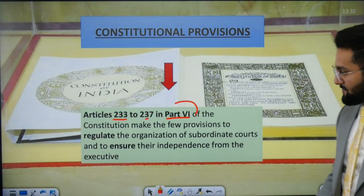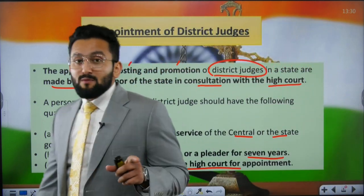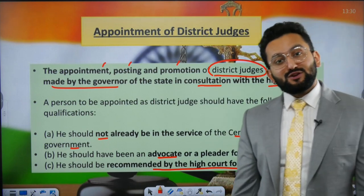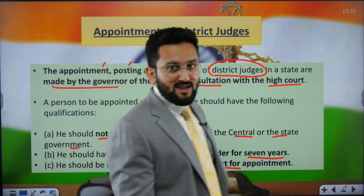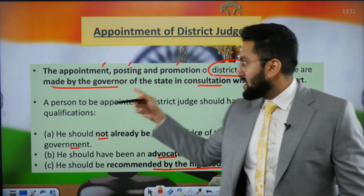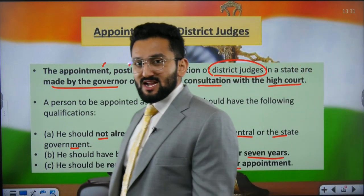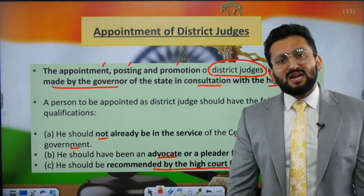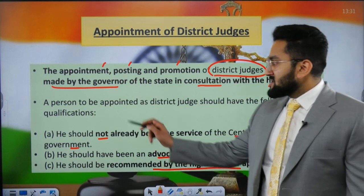Now, appointment of district judges. UPSC can play with you by saying 'appointment of judges at district level' versus 'appointment of district judge.' There's a difference, because judges at district level can include other judges as well — for example, Additional District Judge or Metropolitan Magistrate. The appointment, posting, and promotion of a district judge in a state is done by the Governor of the state in consultation with the High Court. Note: neither SPSC nor the state government is mentioned here. Primary role is with the High Court.